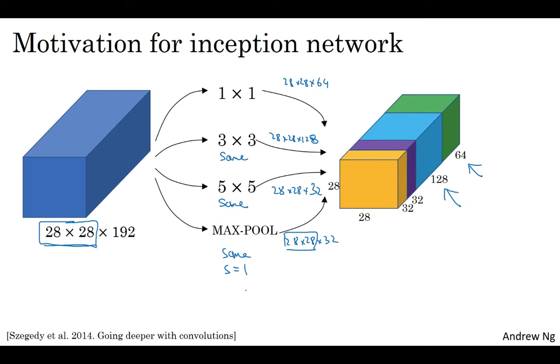With an inception module like this, you can input some volume and output, in this case, if you add up all these numbers—32 plus 32 plus 128 plus 64—that equals 256. So you will have one inception module input 28 by 28 by 192, and output 28 by 28 by 256.